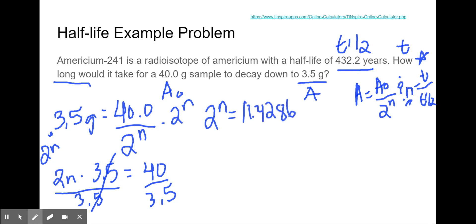So 2 to the power of N is equal to 11.4286. Just like you learned in pH and pOH calculations, you have to use the log to pull the N out of the exponent. So this is log of 2 to the N equals log of 11.4286. I'm just going to use the log button on my calculator to find the log of 2.